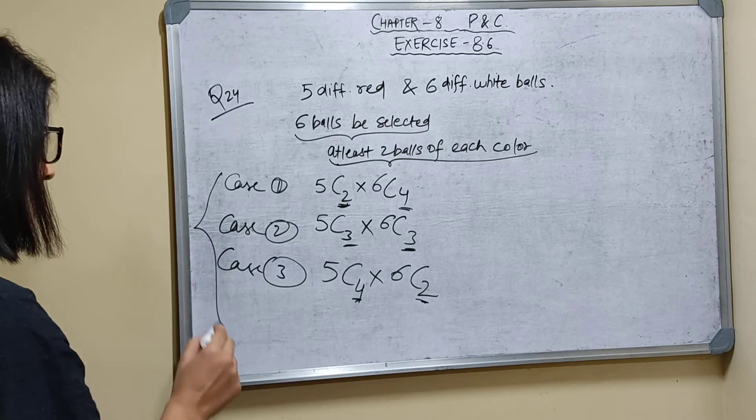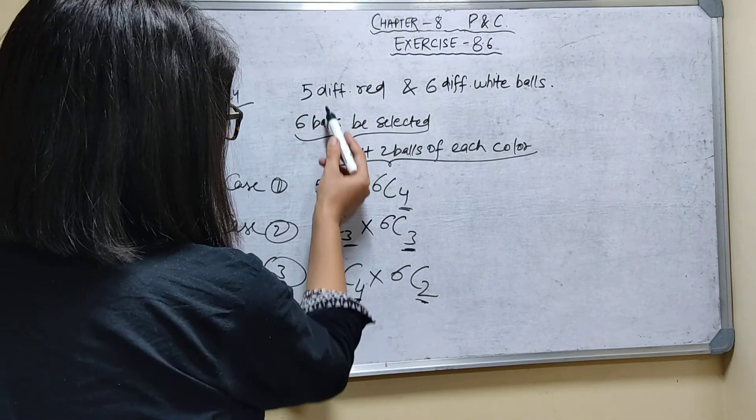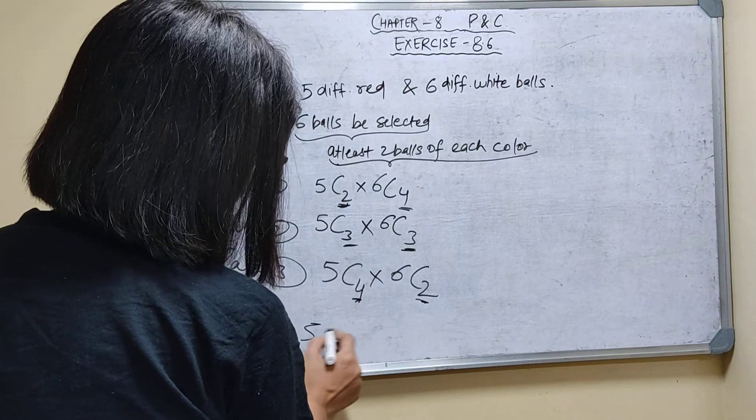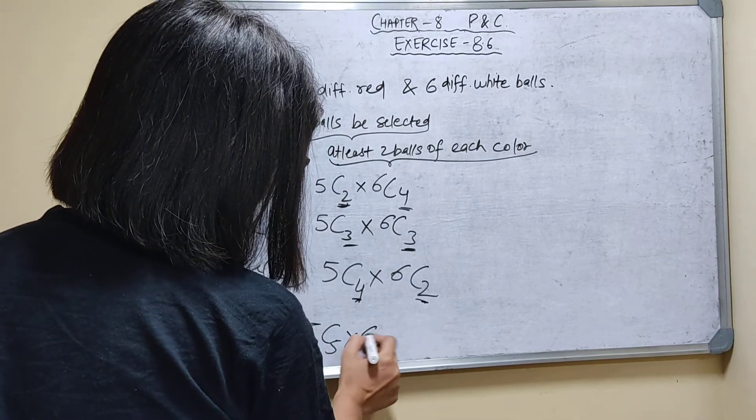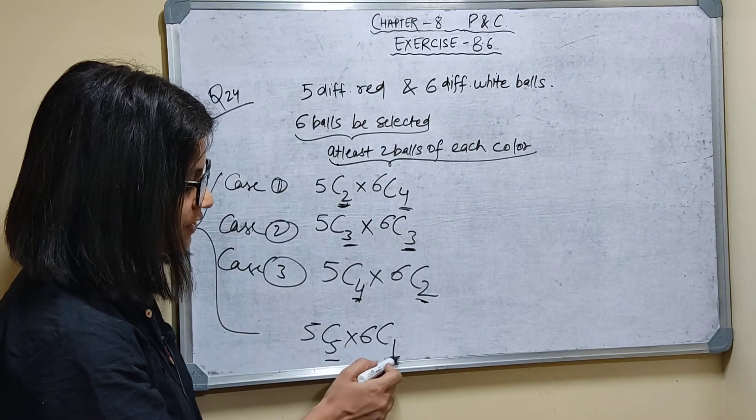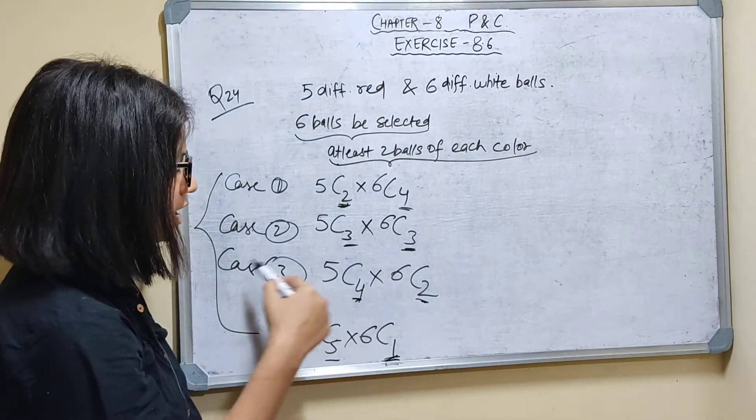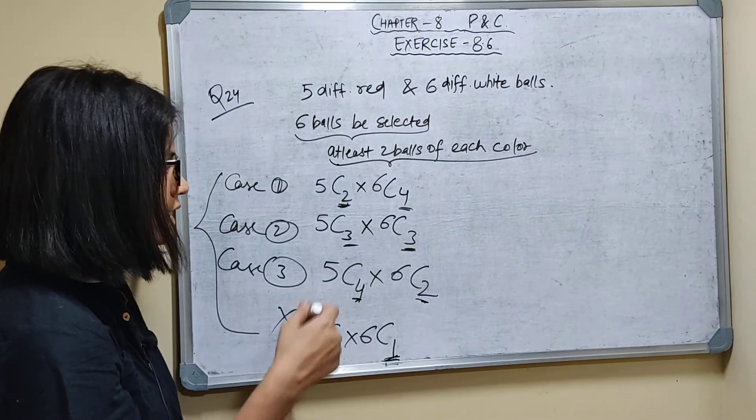So I have all 3 cases to consider. If I were to take 5C5, all 5 red balls, then it would be 6C1, 1 white ball, because 5 plus 1 equals 6. But this doesn't satisfy the condition because we need at least 2 balls of each color. So we only consider these 3 cases.